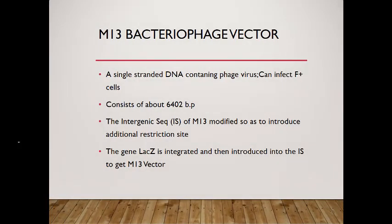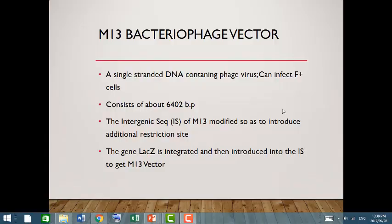M13 is a filamentous phage vector — a single-stranded DNA-containing phage virus that can infect F-positive cells. It consists of about 6,400 base pairs. The intergenic sequence area of M13 is modified to introduce additional restriction sites so that a wide variety of endonucleases can act on it. The lac gene can be integrated into it and used to create M13 as a vector.